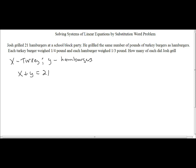Now it goes on and says that he grilled the same number of pounds of turkey as he did hamburgers, and we know that the turkey burgers were one-fourth of a pound, so let's say one-fourth x. And he said he grilled the same amount, so that's going to equal one-third y. That looks strange, but that's what the problem is giving us.